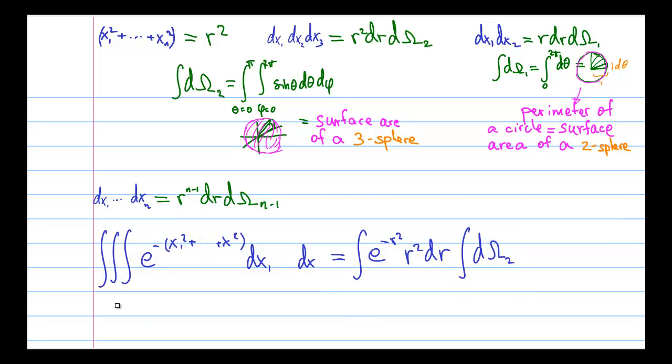And so once again, we rewrite our original integral in terms of the radial part and the angular part. And in two-dimensional case, the angular part gave us the surface area of a two-sphere. In three-dimensional case, the angular part gave us the surface area of a three-sphere.